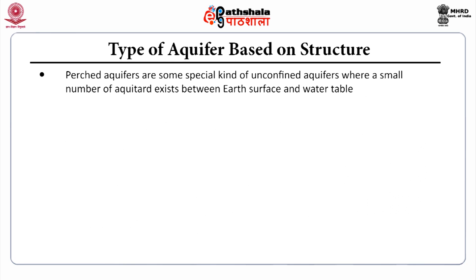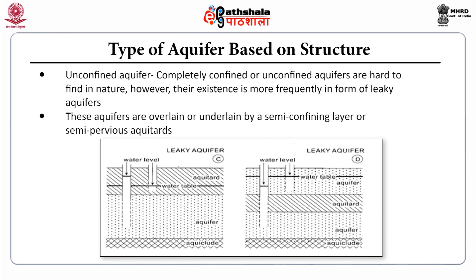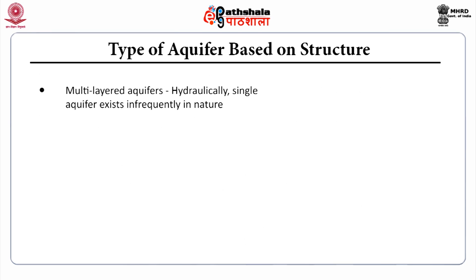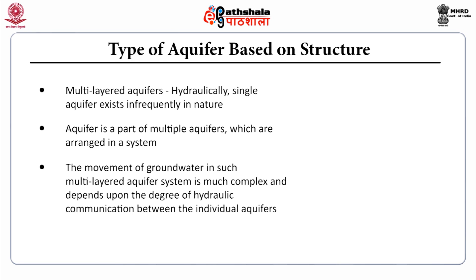Perched aquifers are a special kind of unconfined aquifer where a small number of aquitards exist between the surface and the water table. The water balance in unconfined aquifers can be demonstrated with the equation given. Leaky aquifers: in the first diagram, the aquifer is surrounded by an aquitard above and an aquiclude at the bottom; in the second diagram, the aquifer has an underlying aquitard, then another aquifer, and then an aquiclude under that second aquifer. Multi-layered aquifers: hydraulically single aquifers exist infrequently in nature; aquifers are typically part of multiple aquifer systems arranged together, and the movement of groundwater in such multi-layered systems is much more complex.